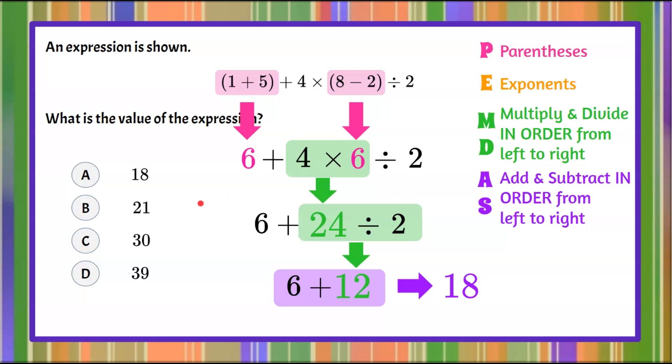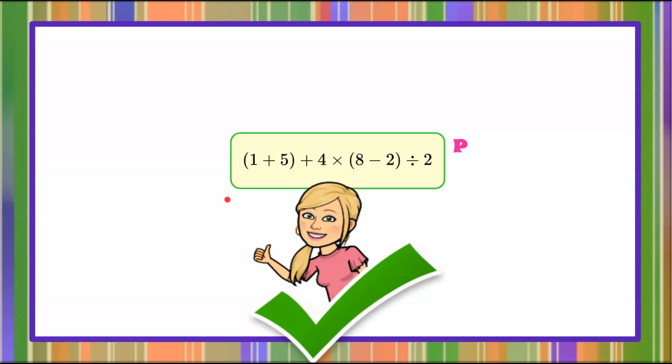And we can identify that our solution is answer choice A, 18. That is the value of this expression using order of operations. And there you have it. That is how you use the acronym PEMDAS to evaluate or simplify a numerical expression.